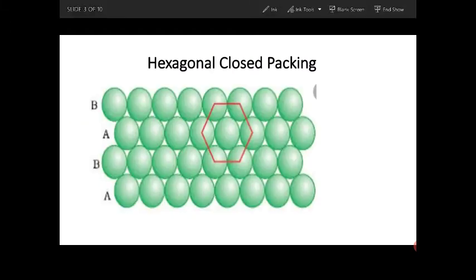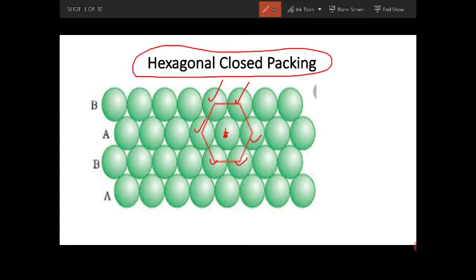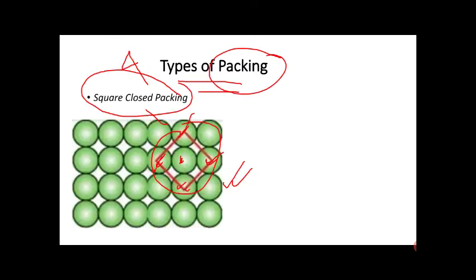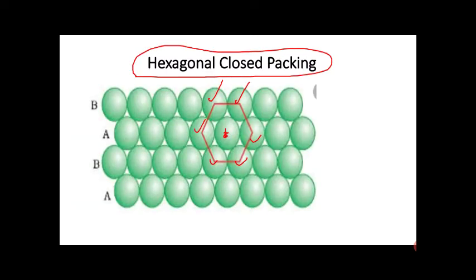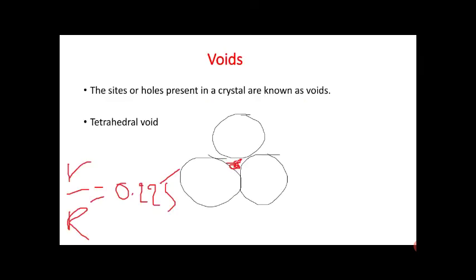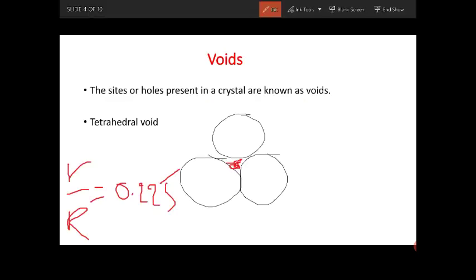The next type is: if you consider this atom, this sphere is touched by one, two, three, four, five, six spheres directly. This kind of packing style is known as hexagonal close packing. There are some other types of packing also, but they are not so important for your syllabus. You just have to remember these two types of packing.